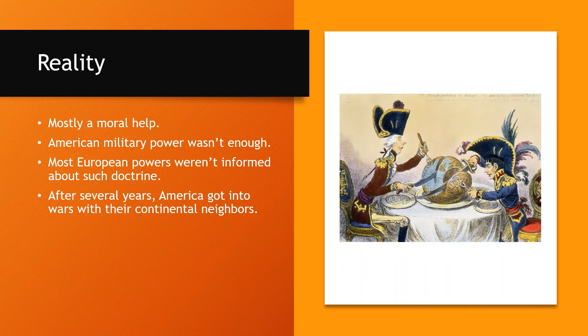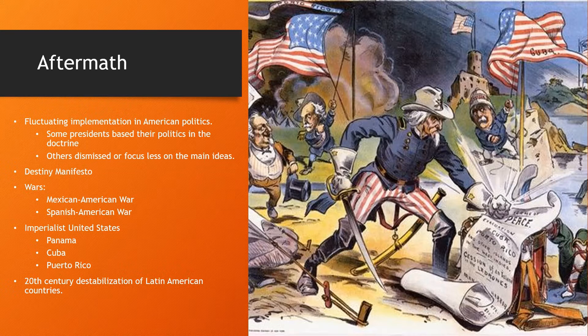Some years later, the United States ignored their own doctrine and started to enter wars with countries in the Western Hemisphere, joining the imperialistic game. The doctrine's aftermath was a fluctuation of policy from 1821 to this day, with some presidential speeches adding their own new ideals, while other presidents decided to either ignore the doctrine or not focus on those ideals.